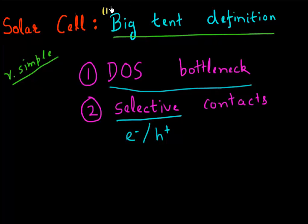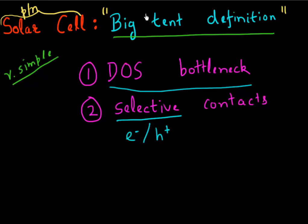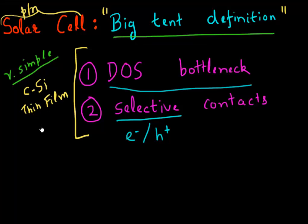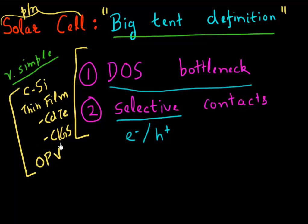In the last video, I described this big ten definition of how a solar cell works. I was also trying to dispel the very limited definition that you might have picked up from your semiconductor class — that you need a p-n junction for a solar cell to work. Instead, I described a very simple but broad definition which requires only two things for a solar cell to work. You can apply this definition to a crystalline silicon-based solar cell, a thin film-based solar cell such as CdTe or CIGS, or even an organic-based solar cell, and we will study all of these in subsequent videos.